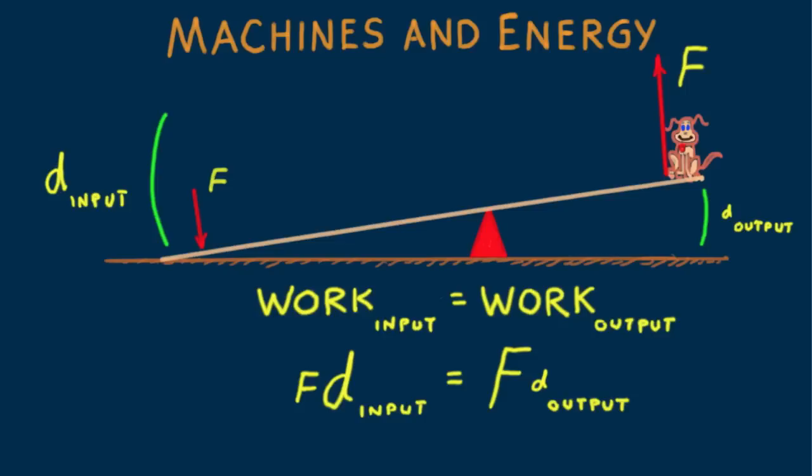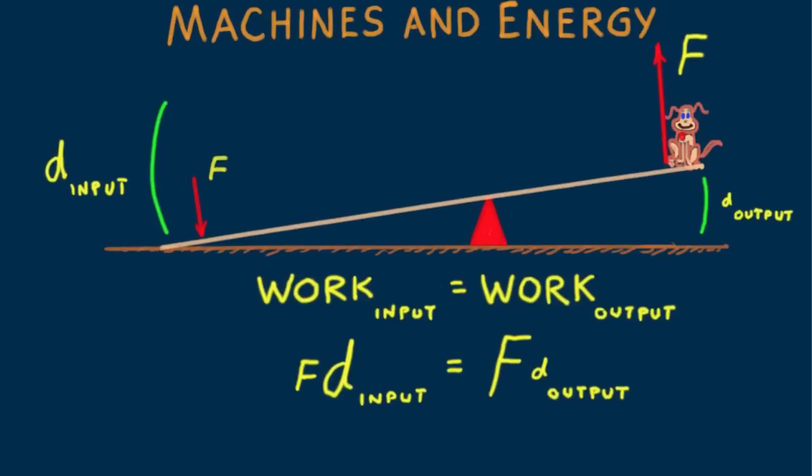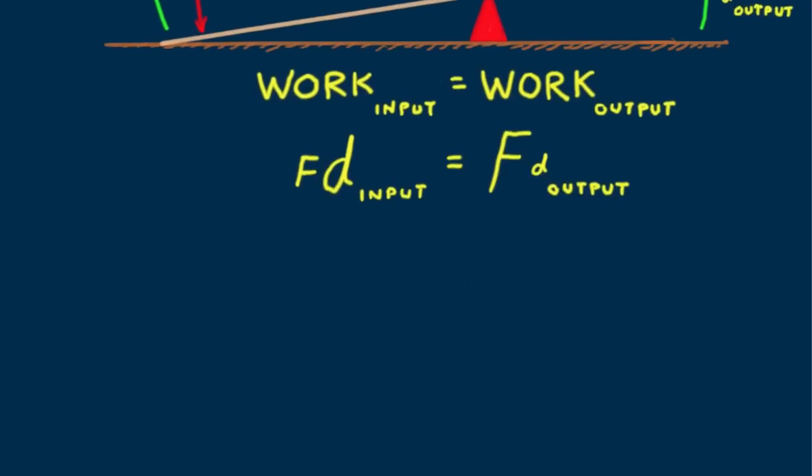In this case, where the input side of the lever is longer than the shorter output side, we write this with a big d for input and a big F for output. We write different size symbols to indicate relative magnitudes. In this way, a lever is able to multiply input forces.